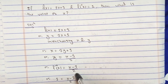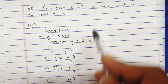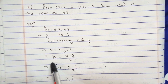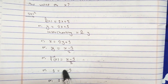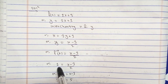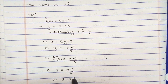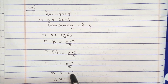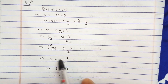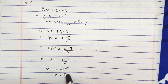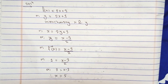It is already given that f inverse x equals 1, so in place of f inverse x we write 1. After this, cross multiply and isolate x. We find the value of x equals 5. That's it.